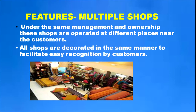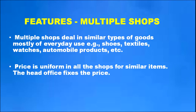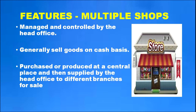Multiple shops operate at different places near the customers and are managed by the same managers. These shops are decorated in the same manner to help customers identify them, ensuring easy recognition. Multiple shops deal in similar types of goods, mostly of everyday use, such as shoes, textiles, watches, and automobile products. Price is uniform in all shops for the same items, even across different cities, because price is controlled and fixed by the head office. They sell goods on a cash basis.